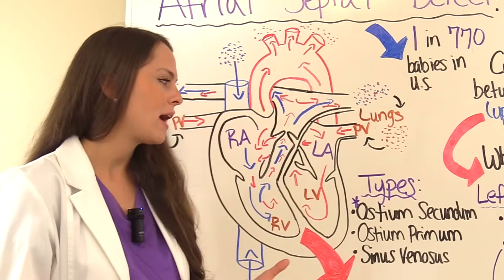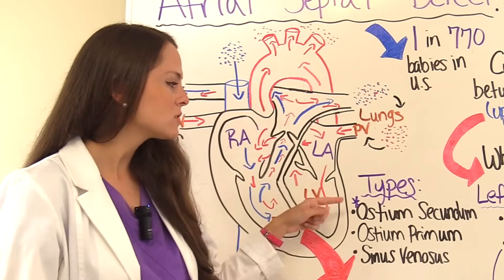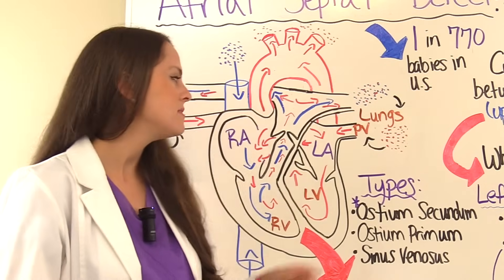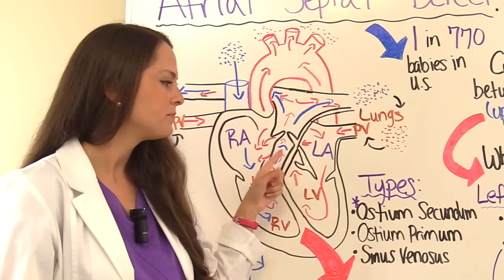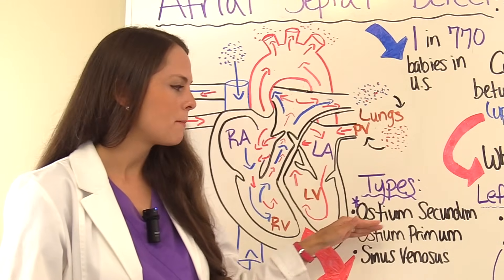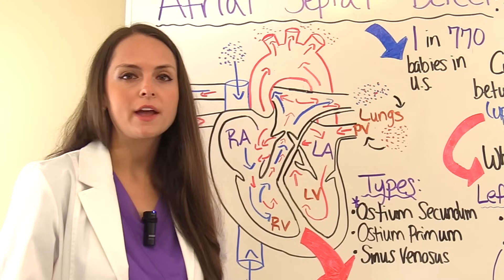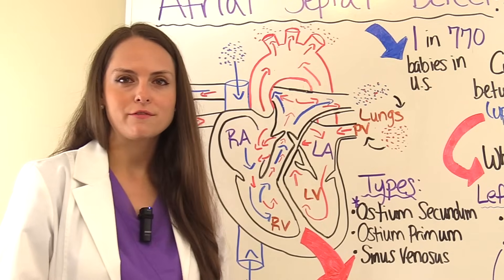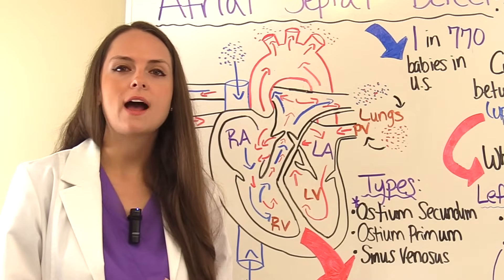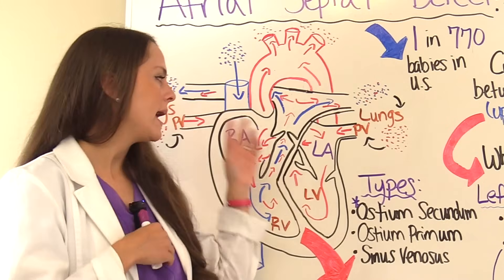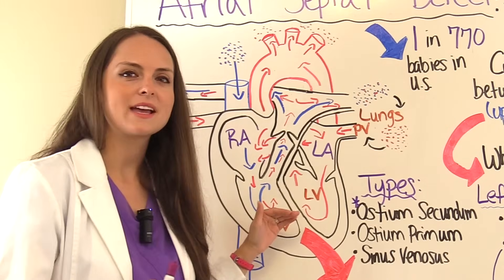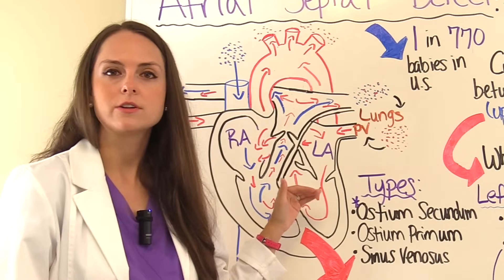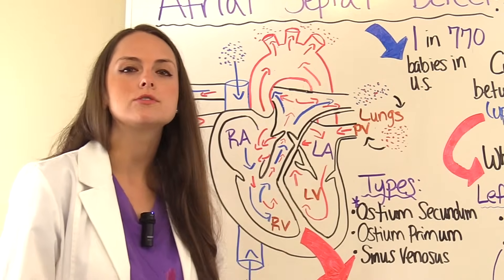The first type is the most common type of ASD and it's called ostium secundum. These holes are found in the middle of the atrial septum. Another type is ostium primum, and these holes are found in the bottom of the atrial septum close to the atrioventricular valves — which are the tricuspid valve and the bicuspid (mitral) valve — so the holes will be close to those locations.